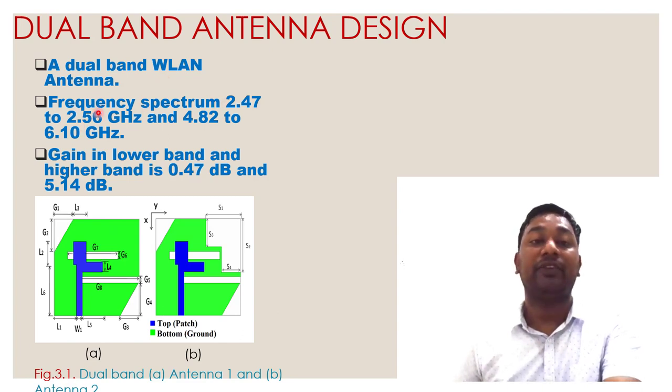The frequency spectrum is 2.4 to 2.56 gigahertz and 4.8 to 6.10 gigahertz. So antenna works in dual band region but gain in lower band is 0.47 dB while in higher band gain is good. That is the problem: whenever we design a dual band antenna, in some band the gain is very poor.